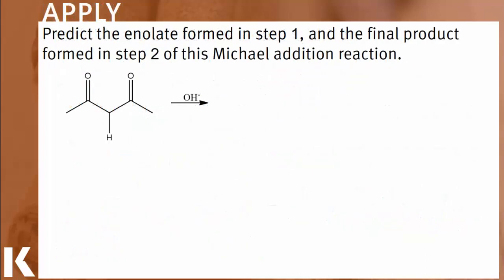Let's use this information to predict a Michael addition reaction. First, we need to form our enol by base extraction of the alpha hydrogen — the hydrogen next to the carbonyl. This produces the Michael donor enol with a nucleophilic carbon.